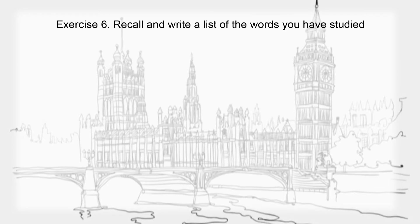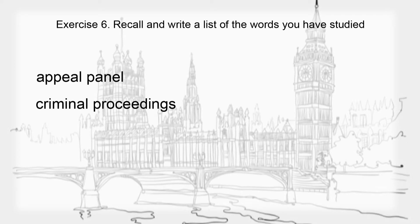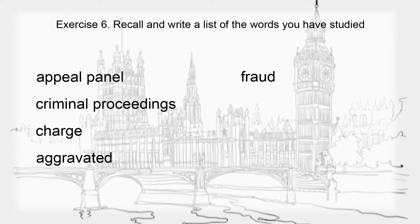You will have 30 seconds to recall and write the list of words you have learned. Charge, Aggravated, Fraud, Contrary to, Remainder.